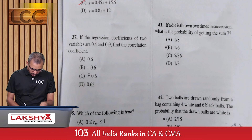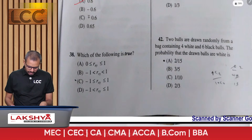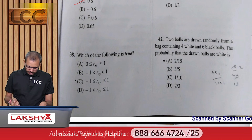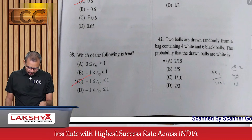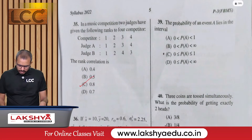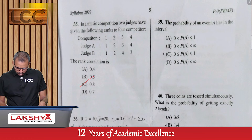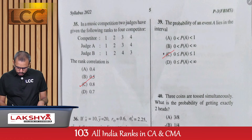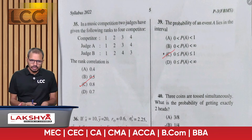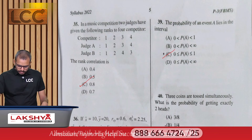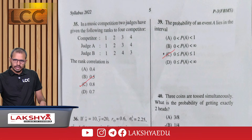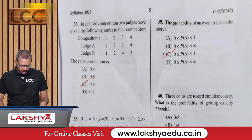Question 38: Which statement is true — the correlation value always lies between -1 and +1 — option C. Question 39: The probability of an event always lies between 0 and 1, where both 0 and 1 are included — option C.